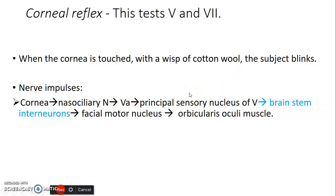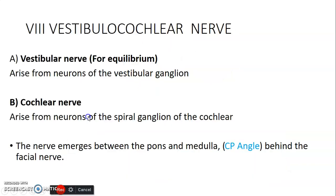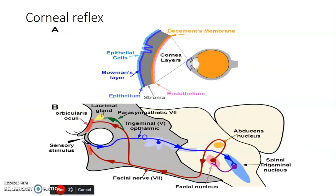To summarize the corneal reflex pathway: a sensory stimulus to the cornea is picked up by the nasociliary nerve via the ophthalmic division, travels to the trigeminal principal sensory nucleus, then interneurons connect this sensory nucleus to the facial motor nucleus. The facial nerve, passing around the abducens nucleus, then causes the orbicularis oculi to contract and close the eye.